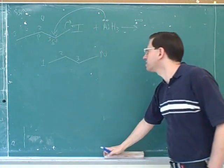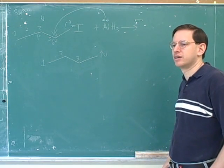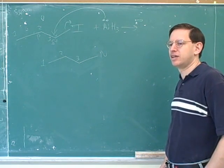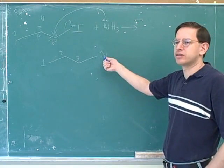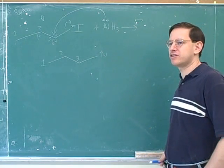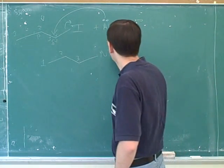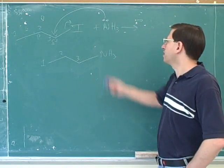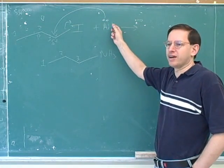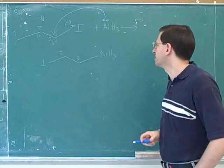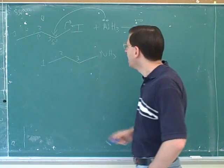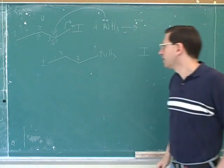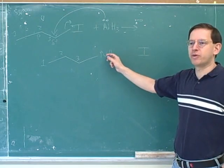Who will the nitrogen be connected to in the product? The carbon, and also three hydrogens. How do I know it's still connected to three hydrogens? Because I haven't drawn any arrows for those breaking off. Since no arrows were drawn for them, they must still be there. And then the iodide is broken off. So far this matches exactly what was written before — so far, so good.